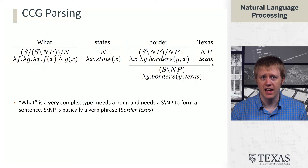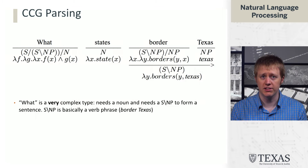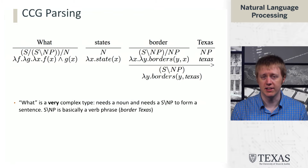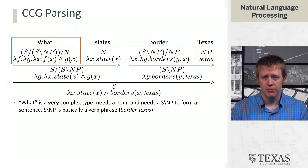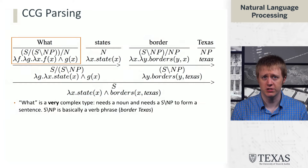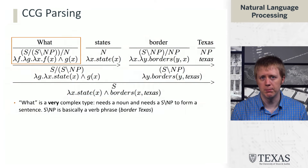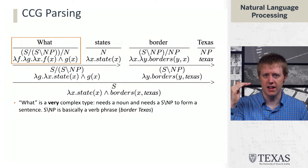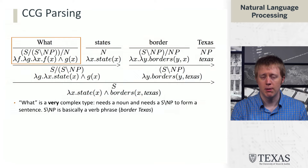Basically, 'what' needs a noun and an S back NP in order to form a sentence. This is a particular usage of 'what' in this sentence — essentially encoding 'what x does y.' When we combine everything, it eats up 'states' as lambda x state, then combines with S back NP, and produces the final expression: lambda x, state(x) and borders(x, Texas). If we have a big database of entities, we scroll through and say: give me all the states where those states border Texas. This is a very nice representation of the question.